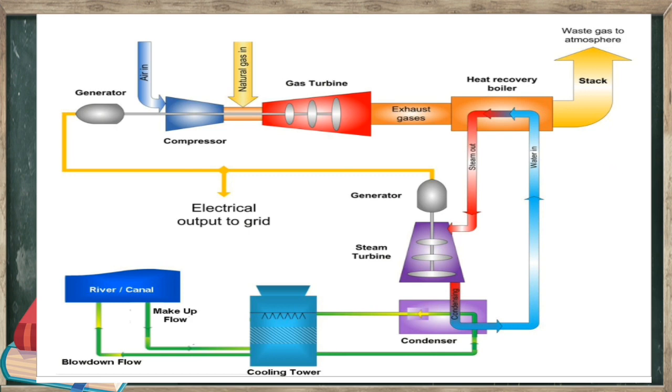In a conventional power plant, we get only 33% electricity and remaining 67% waste. By using combined cycle power plant, we are getting up to 68% electricity.